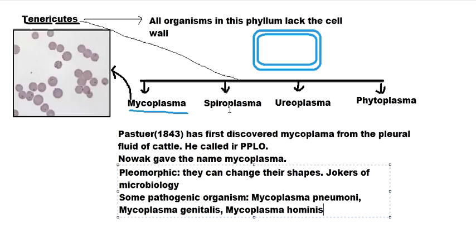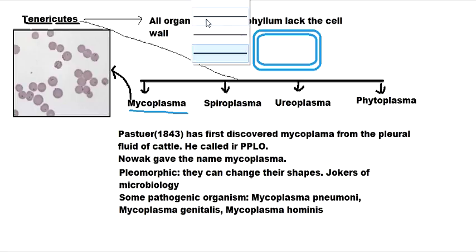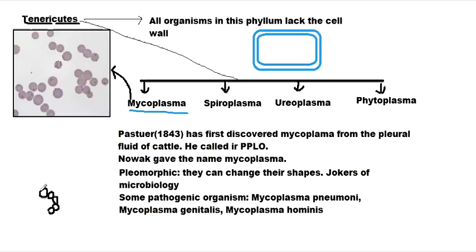Spiroplasma are again Tenericutes and therefore lack the cell wall. Spiroplasma are given this name because they are spiral-shaped. To clarify, one single cell is spiral — it's not that multiple cells are forming a spiral structure together. One cell is actually a helical-shaped cell, not S-shaped but spiral-shaped.